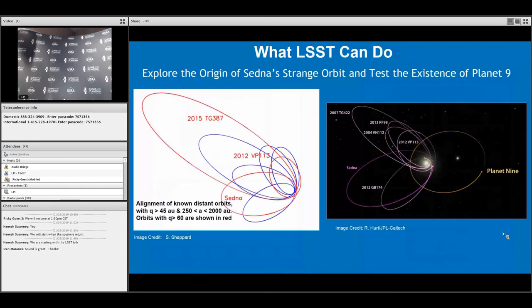What else can it do? It's going to explore the origin of Sedna and the objects that are detached from Neptune. There's a proposed alignment of these distant detached minor bodies that potentially suggests the existence of Planet Nine.